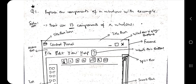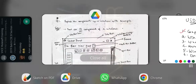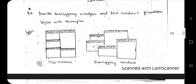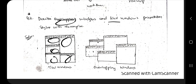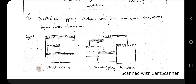That was the first question — tick mark done. You just have to remember what components are present and write a few words about each. Next, we have the two types of window presentation styles: overlapping windows and tiled windows. The name itself tells you — tiled windows are like tiles on a floor, arranged in a tile format, and overlapping means the windows overlap each other.